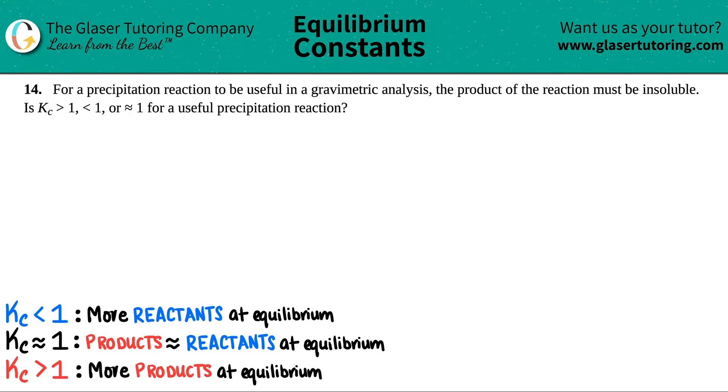Number 14. For a precipitation reaction to be useful in a gravimetric analysis, the product of the reaction must be insoluble. Is the Kc greater than 1, less than 1, or roughly equal to 1 for a useful precipitation reaction?